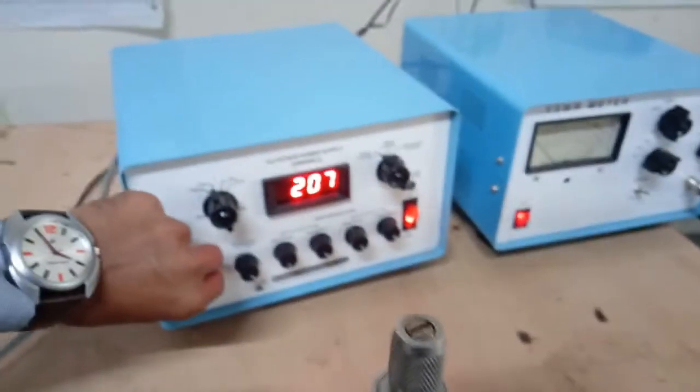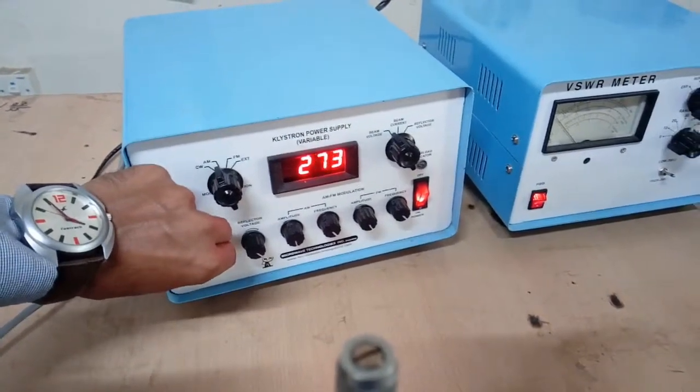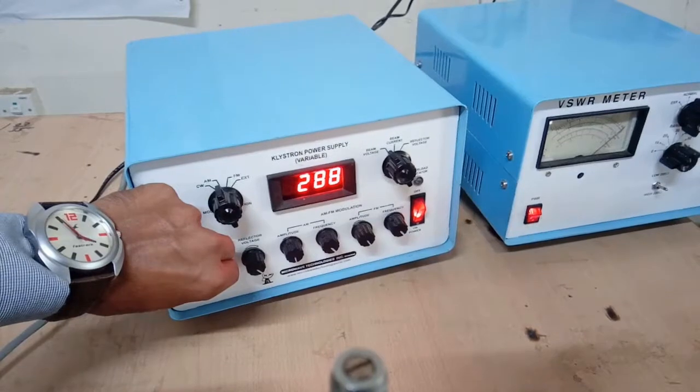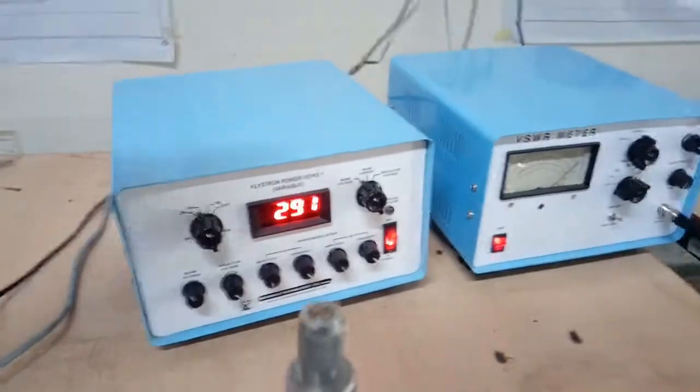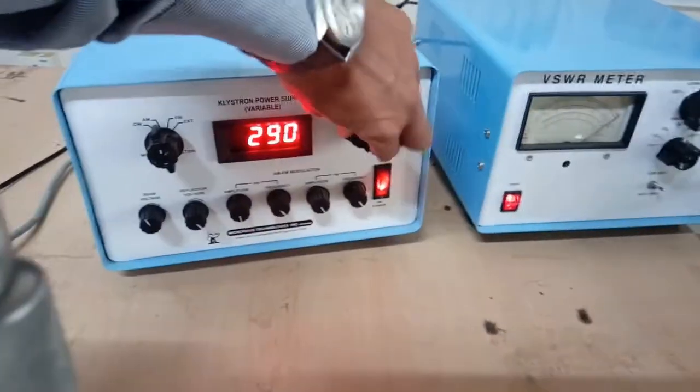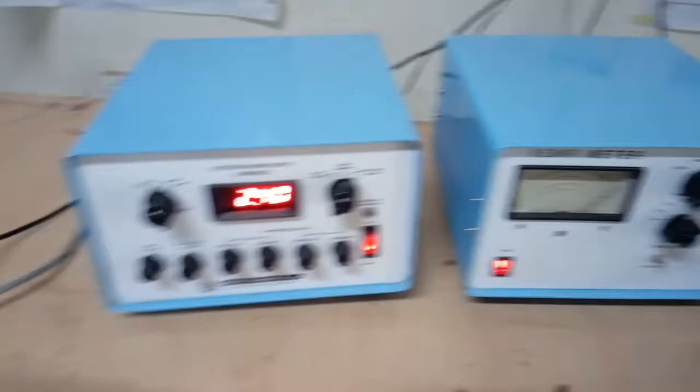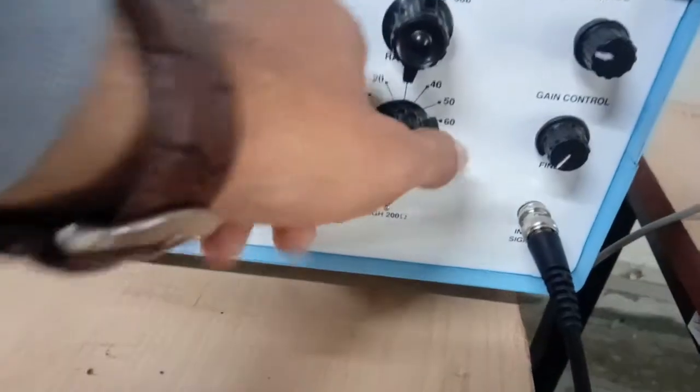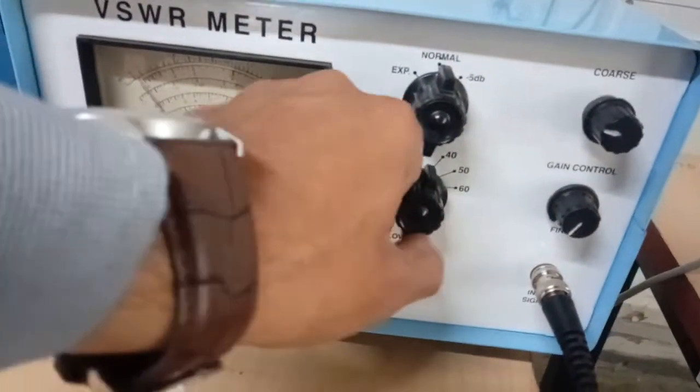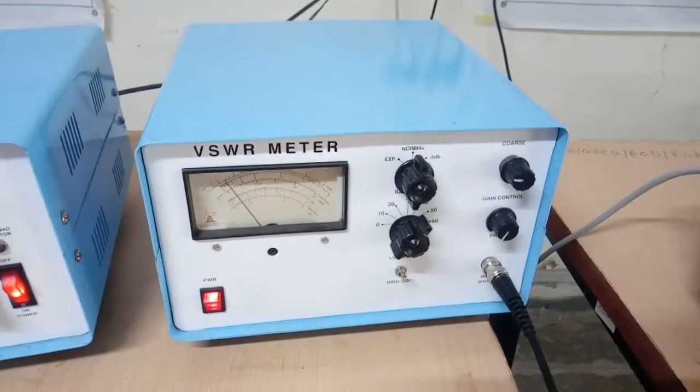So for that, set the beam voltage 300 to 290. Check the beam current, reflector voltage, and keep the VSWR range switch to 40 dB range with normal scale.